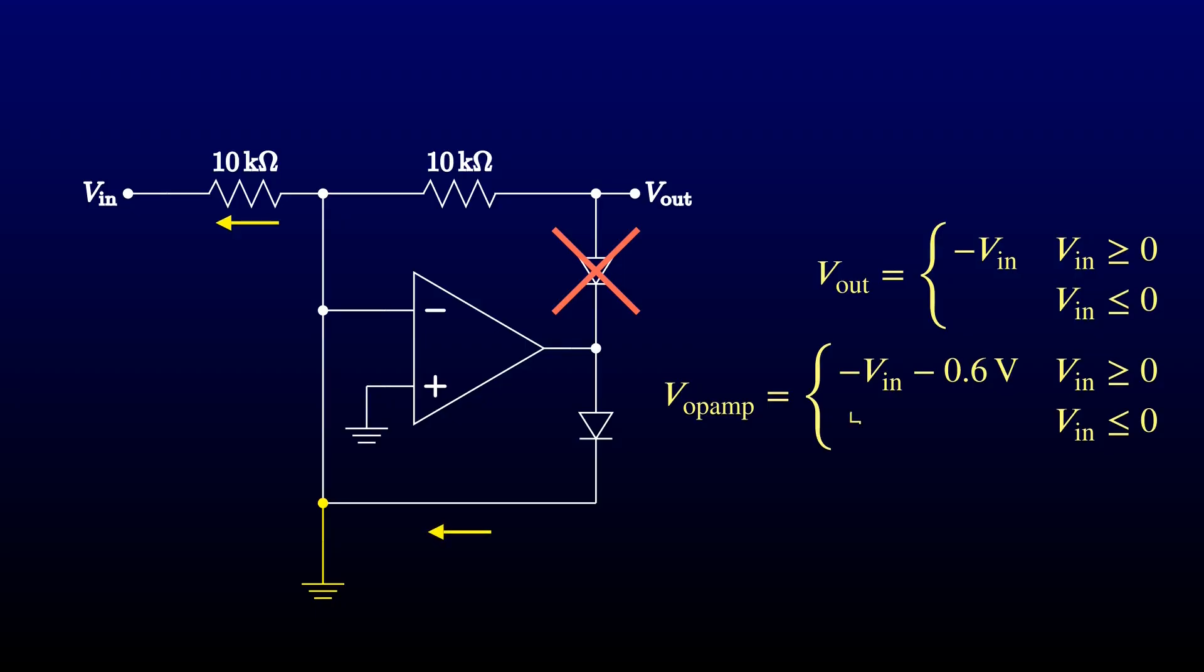That will place the output of the op-amp at one diode drop above ground, which is at least one diode drop above the input signal, confirming that the top diode will be turned off hard.